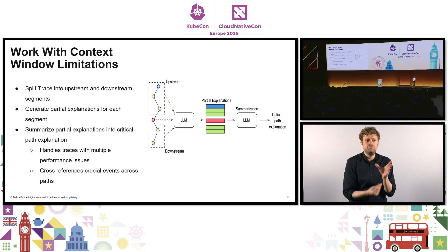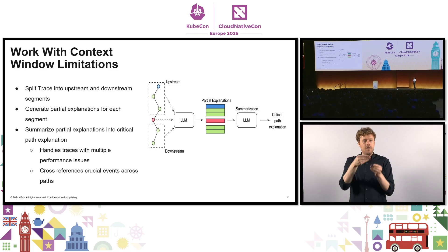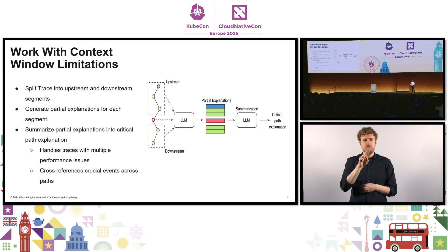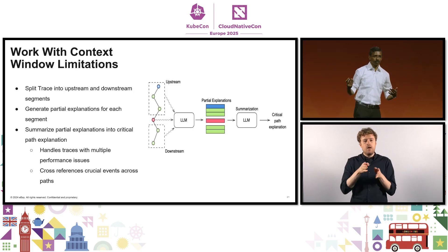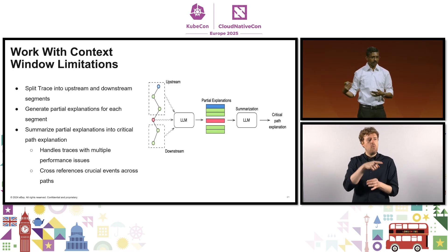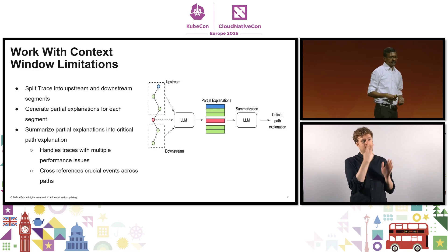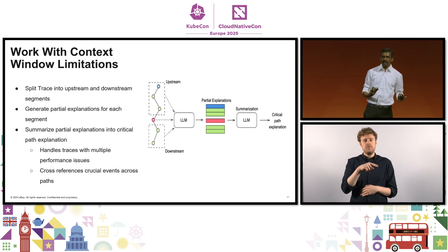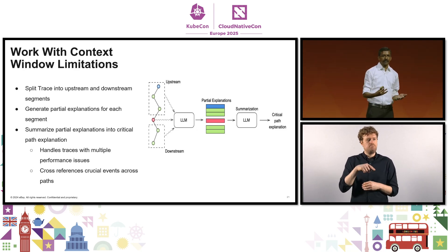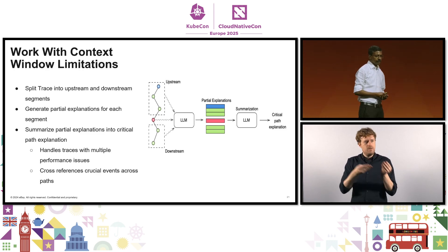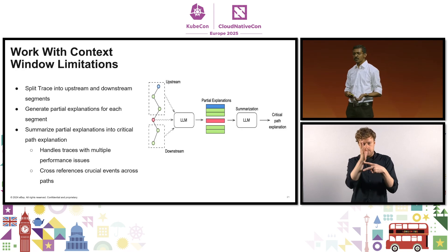Another thing we did was dictionary-encode everything. So instead of service name equal to checkout, it's just service name equal to 1. For all practical purposes, machines don't really need to know if it is checkout or foobar — they just look at things, analyze, and spit out responses. Once we've done that, we split the trace into upstream and downstream chunks, generate partial explanations for all of them, and combine them to generate a final explanation of the full critical path. This helps us identify if there are multiple performance issues to be worried about.